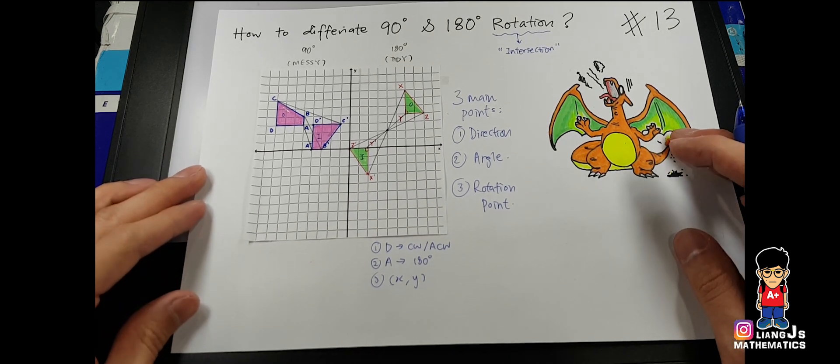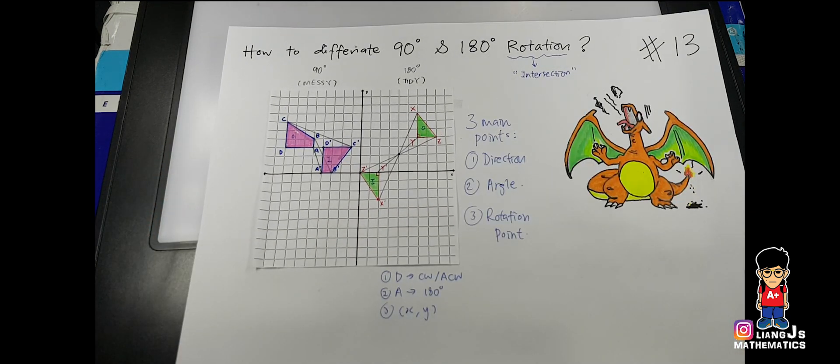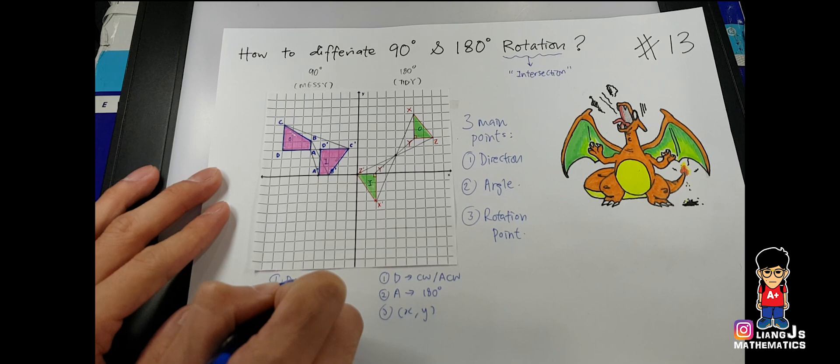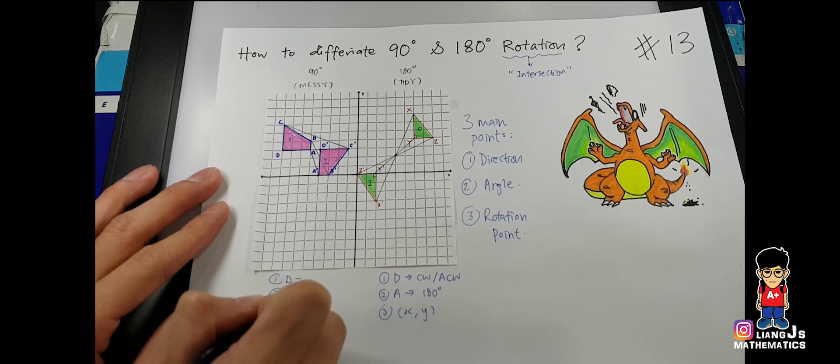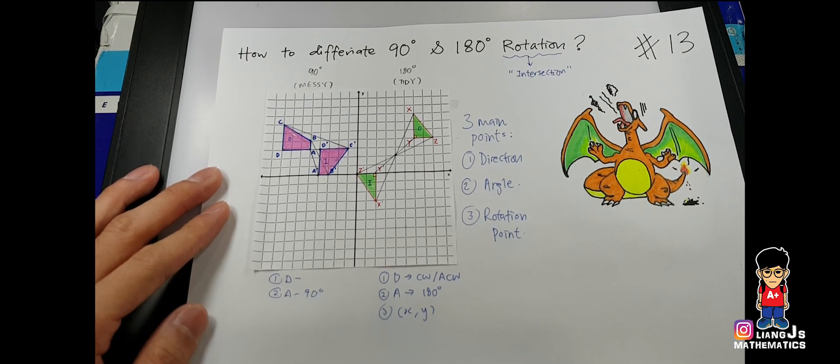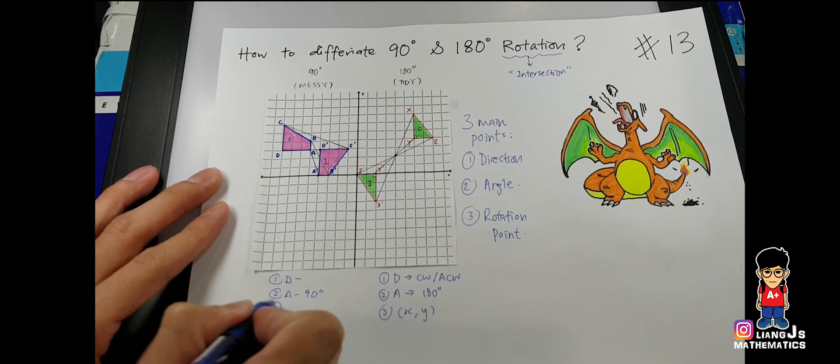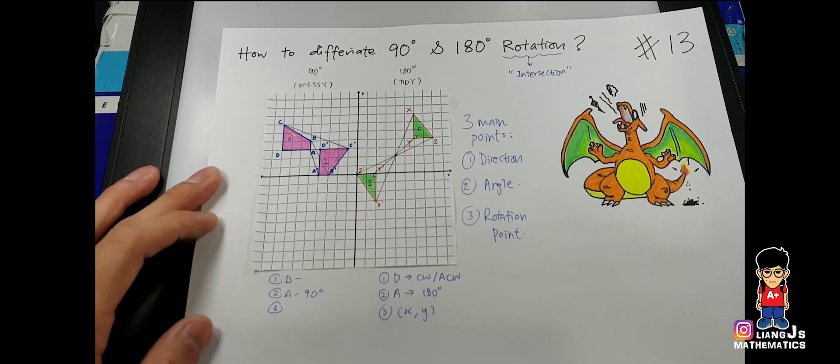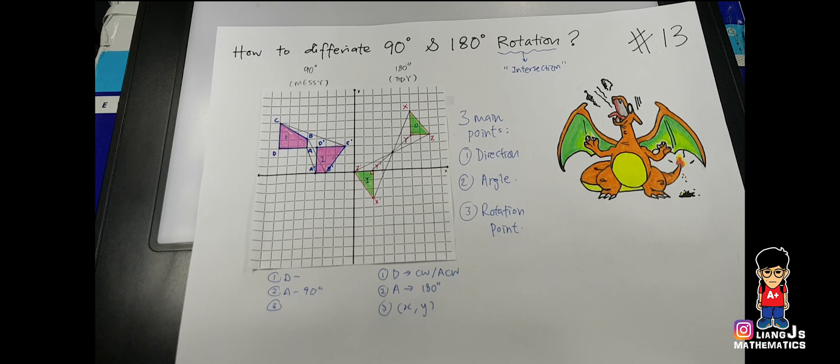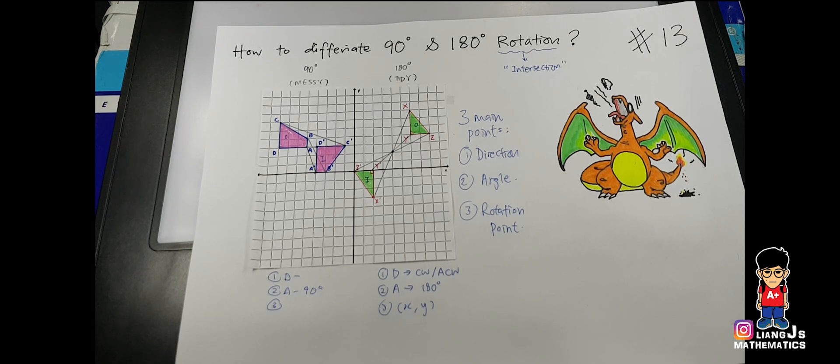Where 90 degree, number one, direction unknown. Number two, angle, yes, we have 90 degree because of the messy version. And number three, we don't have the rotation point. So now we have to find it. And once we find the rotation point, then you will be able to find your direction. So how I do it is, I have three steps on how to get your rotation point.